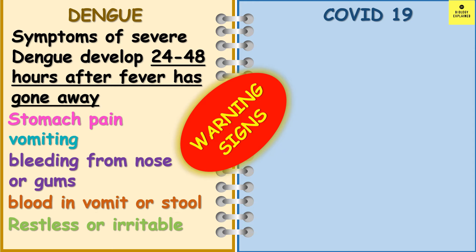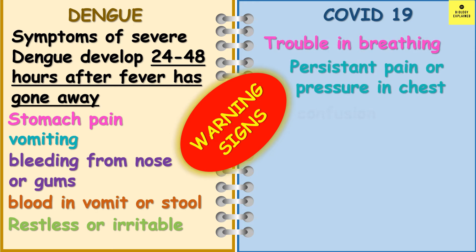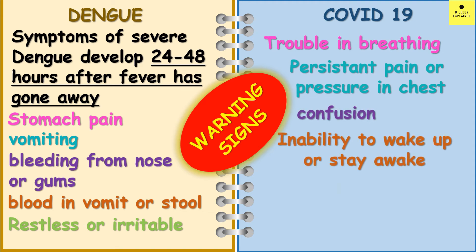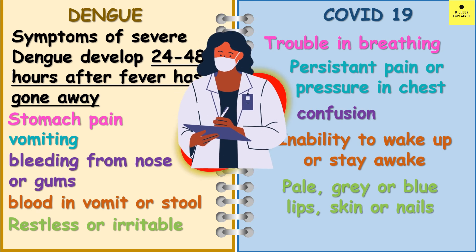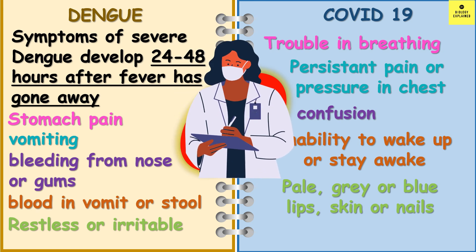In case of COVID-19, the emergency warning signs are trouble in breathing, persistent pain or pressure in the chest, confusion, inability to wake up or stay awake, and pale, gray, or blue colored skin, lips, or nails. Please seek doctor help if you have any of these symptoms.